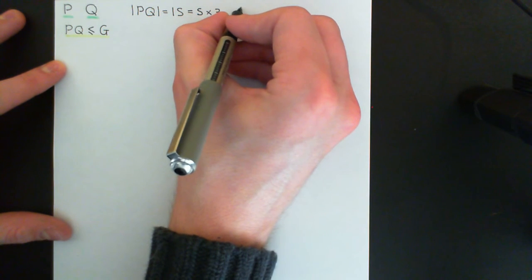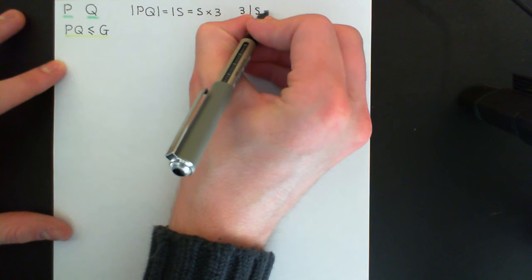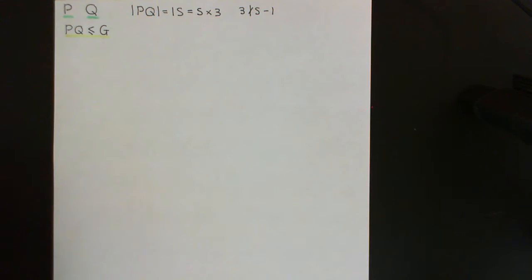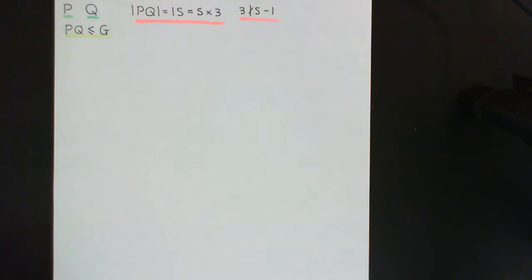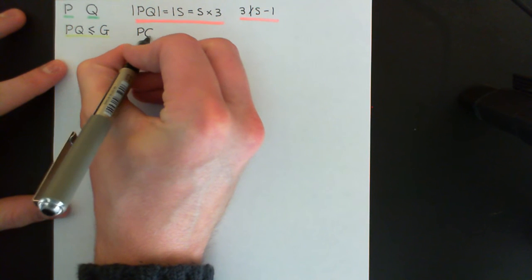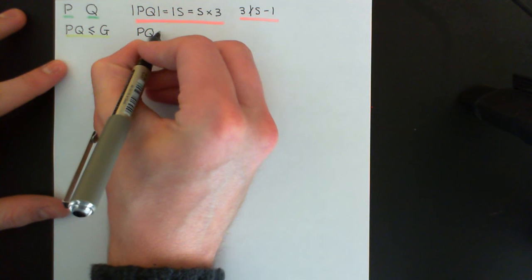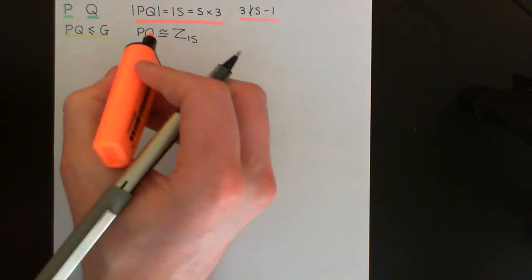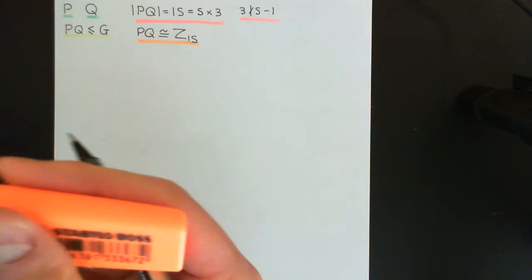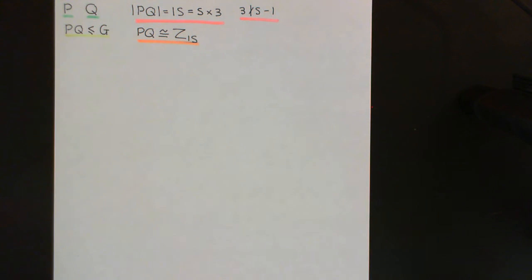There is a lot you can say about groups of orders of the form one prime times another prime, and we discuss these in detail in the video entitled Groups of Order PQ. This case is particularly nice because the smaller prime 3 does not divide the larger prime 5 minus 1, which is 4 — 4 is not a multiple of 3. Therefore we can conclude that there is only one isomorphism class of groups of order 15, which is the cyclic group Z₁₅.